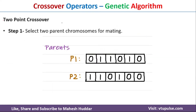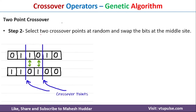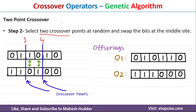The second crossover operator is two point crossover. Again we select two parents P1 and P2. Instead of one crossover point, we select two crossover points randomly — in this case at positions 2 and 4. We then swap the bits between these two crossover points. Once the two bits are swapped, we get new offspring O1 and O2.